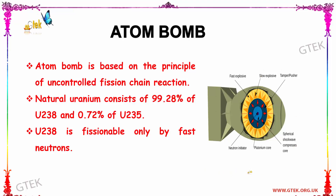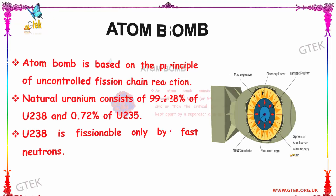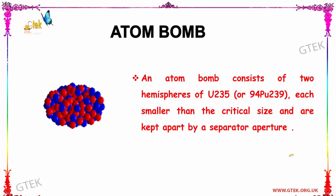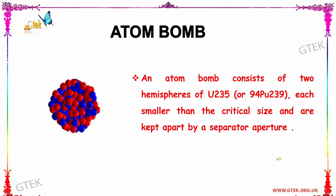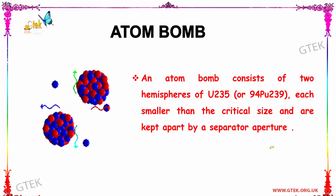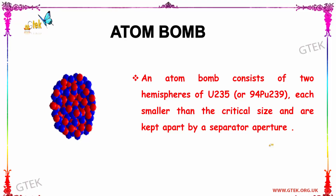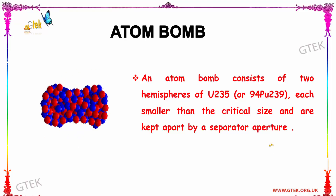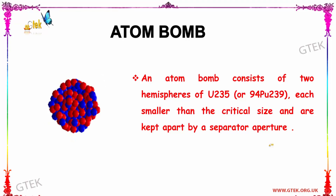The picture on the right side shows an atom bomb. It consists of fast explosive, slow explosive parts, and a tamper/pusher. In the middle is the neutron initiator, a plutonium core, and a spherical shockwave compressed core. An atom bomb consists of two hemispheres of uranium-235 or plutonium-239, each smaller than the critical size and kept apart by a separate aperture.